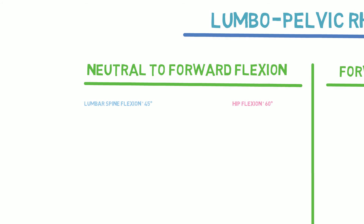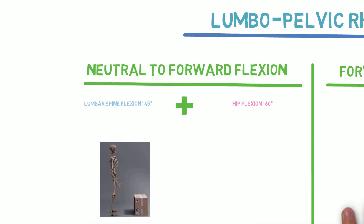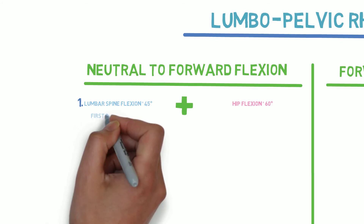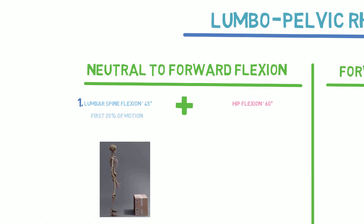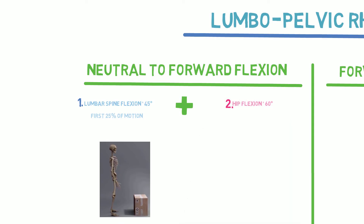Although the lumbar spine and hips do work together to produce the full range of motion, studies have found that in most people lumbar flexion occurs predominantly during the first 25% of the forward bend, and hip flexion occurs predominantly during the last 25% of the forward flexion.